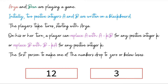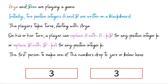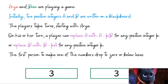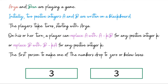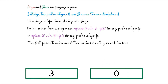Arya can subtract one, two, or three copies of 3 from 12 without immediately losing. Her optimal move is to subtract three copies of 3 from 12, leaving the configuration 3, 3, which she hands to Bran. In this situation, any move Bran makes is a losing move — he is completely stuck. Arya wins.